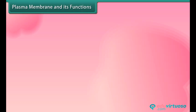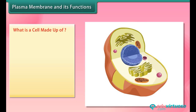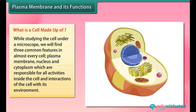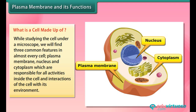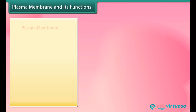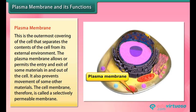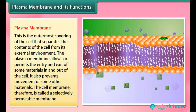While studying a cell under a microscope, we find three common features in almost every cell: plasma membrane, nucleus, and cytoplasm, which are responsible for all activities inside the cell and its interactions with the environment. The plasma membrane is the outermost covering of the cell that separates the cell's contents from its external environment. It allows the entry or exit of some materials in and out of the cell while preventing movement of others, and is therefore called a selectively permeable membrane.